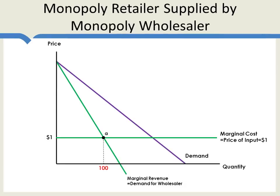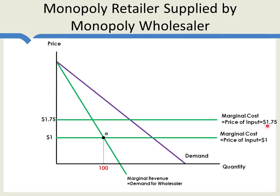What this tells us from the point of view of the wholesaler is that if the wholesaler sets a price of $1, it will sell 100 units to the retailer. If the wholesaler sets a price of $1.75, then the retail monopoly is going to choose the point where marginal revenue equals marginal cost — let's say at a quantity of 80. So if the price is $1.75, the quantity sold is 80. Notice that the marginal revenue curve for the retailer is actually the demand curve for the wholesaler: whatever price the wholesaler sets, it tells us the quantity demanded by the retailer.